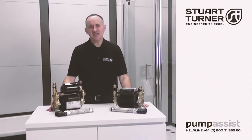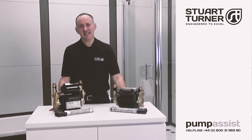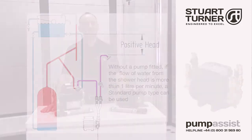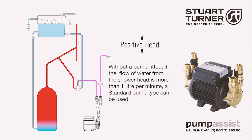The key decision is understanding whether you need a standard or a universal pump. The standard pump uses a flow switch that reacts to natural gravity flow and will activate the pump when the shower valve is opened. If the flow from the shower head due to gravity alone is less than a litre a minute, for example a dribble or a trickle, then a standard pump will not start.